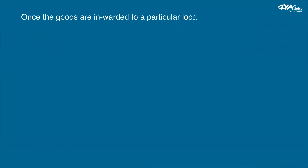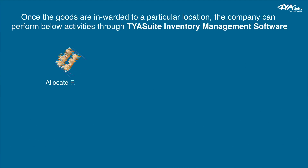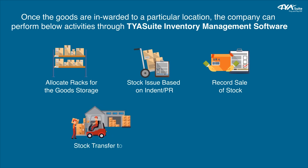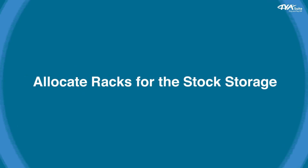Once goods are inwarded to a particular location, the company can perform the following activities through TYASuit inventory management software: allocate racks for goods storage, stock issue based on indent or PR, record sale of stock, stock transfer to other locations, and return stock to vendor.